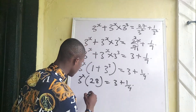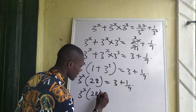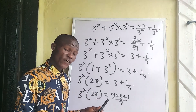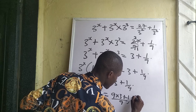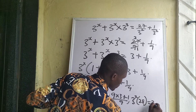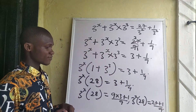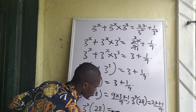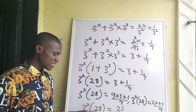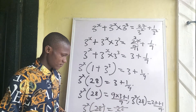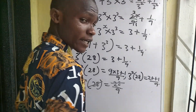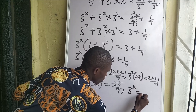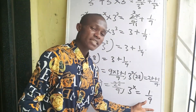We cross multiply: 3 to the power of x times 28 equals 9 times the right side, giving 3 to the power of x times 28 equal to 27 plus 1 over 9. This simplifies to 3 to the power of x times 28 equal to 28 over 9. We can see the 28 cancels, so we are left with 3 to the power of x equal to 1 over 9, where 9 is the denominator.